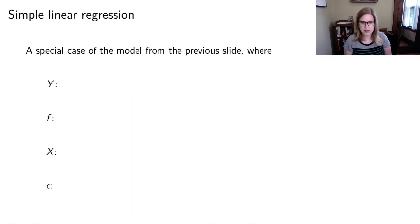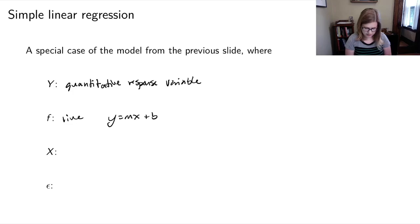And we're going to start this course thinking about linear regression and specifically simple linear regression. So this is a special case of the model from the previous slide. So y is going to be a quantitative response variable. f, the model function, is going to be a line. So you could use the y equals mx plus b kind of notation. Or we're going to talk about some more specific notation on the next slide. x is going to be a single quantitative explanatory variable. And epsilon is still the errors or residuals.